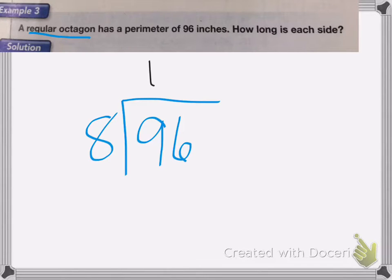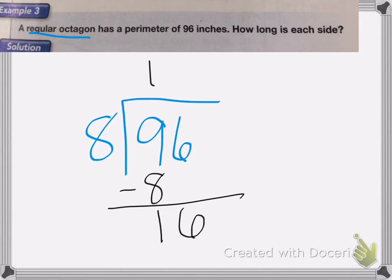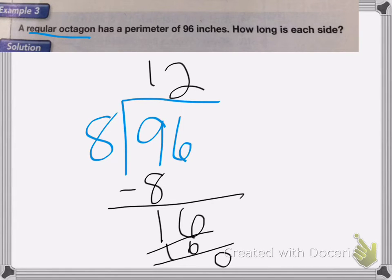Eight goes into nine one time — that's eight. Subtract it, get one and a six. Eight goes into 16 two times — that's 16. Subtract it and we get zero. So each side is 12 inches long. Good luck with your homework.